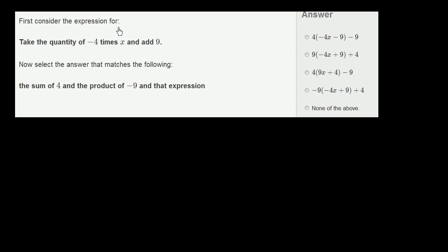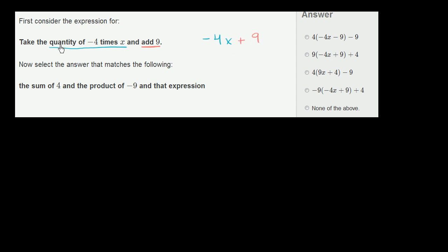First, consider the expression: take the quantity of negative 4 times x and add 9. Negative 4 times x is just going to be negative 4x. So we take that quantity and then add 9. That gives us the expression negative 4x plus 9.